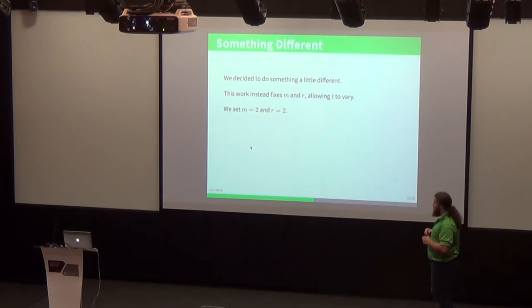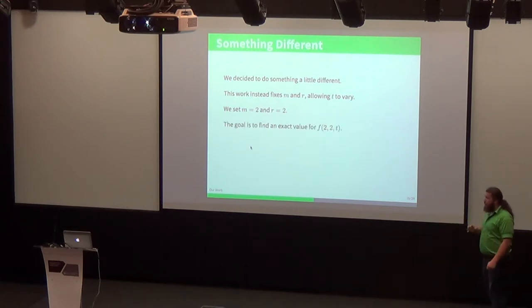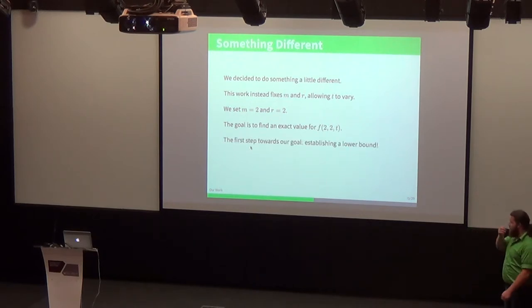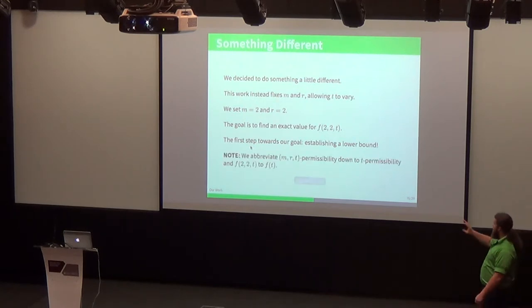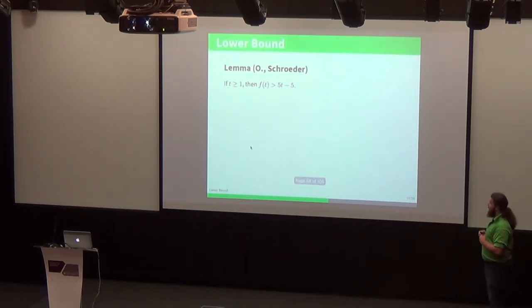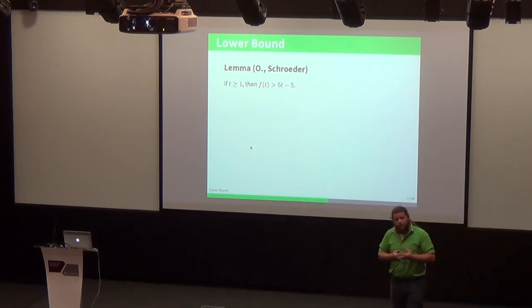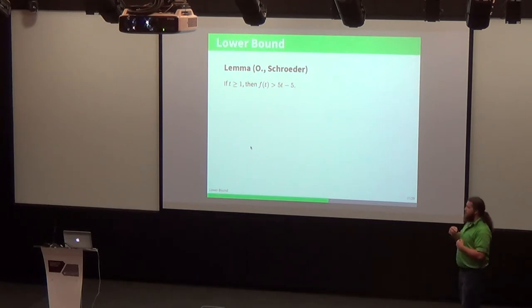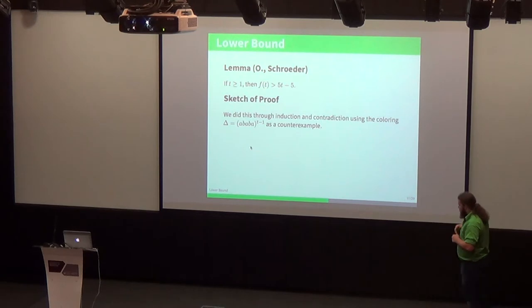What we've done with our work was rather than let the size of our sets vary, we decided to let the number of sets vary. So we fixed m and r and allowed t to vary. We've set m to be 2 and r to be 2 in this work. Our goal was to find an exact value for f(2,2,t). The first step towards this goal is establishing a lower bound. I mentioned this a moment ago, but we're going to abbreviate m-r-t permissibility just to t permissibility, and f(2,2,t) just to f(t), since we fixed those values for m and r.